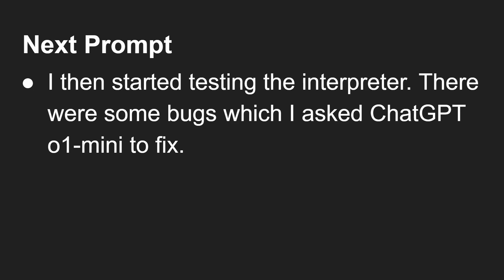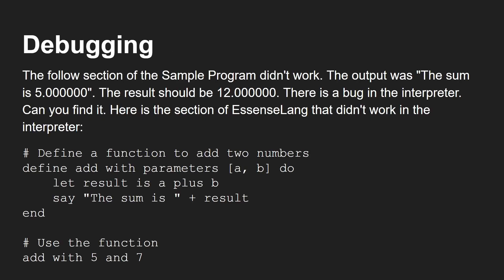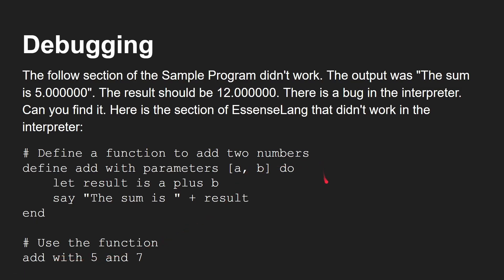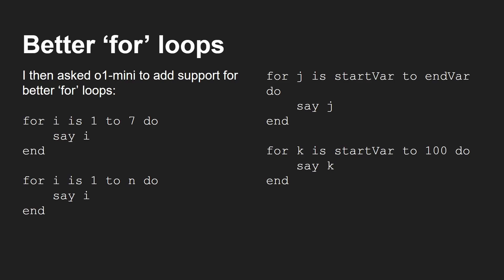There were some bugs which I asked o1 Mini to fix. For example, the output of the sum was 5 when the result should be 12, because it was asked to add 5 and 7. I told it there is a bug in the interpreter — here is the Essence Lang section that didn't work — and it fixed it. I then asked it to enhance the interpreter so you can load files passed by command line, e.g., el main.el, which it did. I also asked it to add better for loops: for i is 1 to 7, for i is 1 to n, and so on — and it handled all of that.